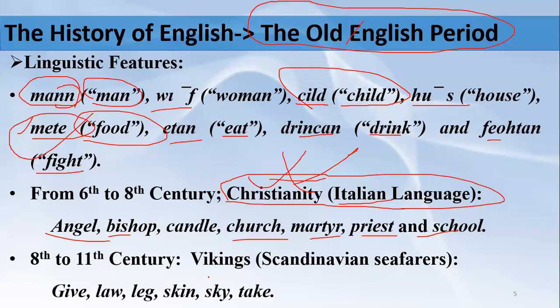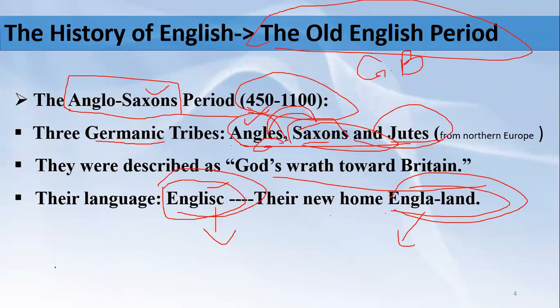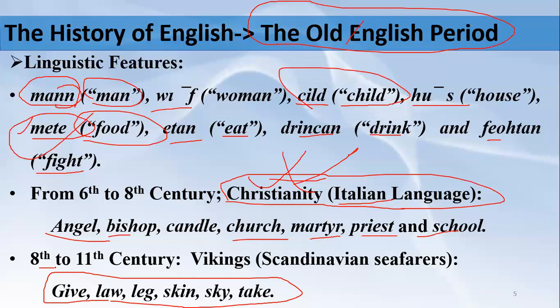The last part of the Old English period, from the 8th century to the 11th century, was an era of Vikings. Vikings were people who came from Scandinavia by sea. When they came to Great Britain they had their own language and contributed words to English such as: give, law, leg, skin, sky, take. These words were derived from Old English via the Vikings in the 8th, 9th, 10th, and 11th centuries — there are hundreds of thousands of such words.